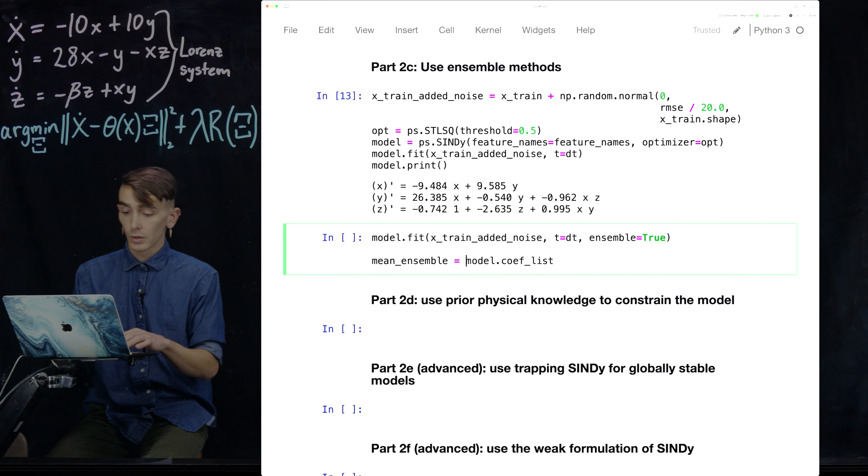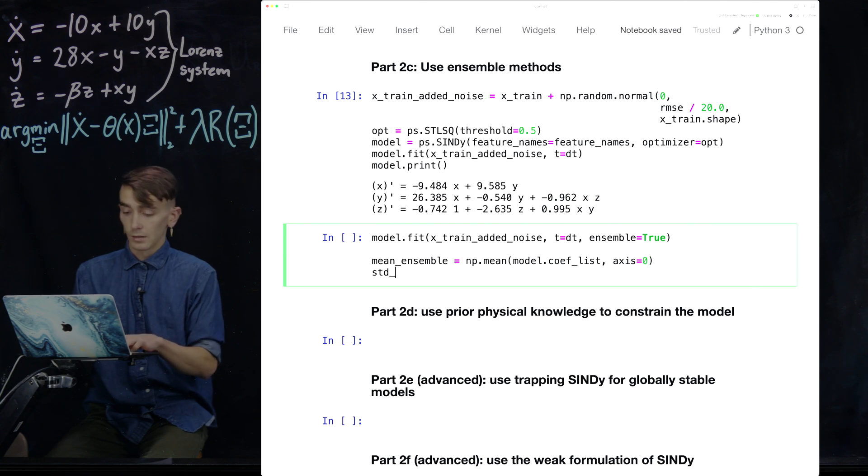And you're going to see they robustify things against noise and allow you to quantify the errors you're getting in each of the coefficients. So we're going to take the average of this list along the first axis, same thing with the standard deviation. Okay, so we computed those.